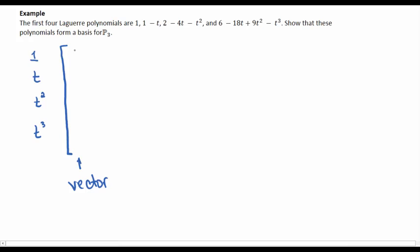So for example, my first polynomial is 1. So that's 1 plus 0T plus 0T squared plus 0T cubed. The second one is 1 minus 1T plus 0T squared plus 0T cubed. The third is 2 minus 4T minus 1T squared plus 0T cubed.